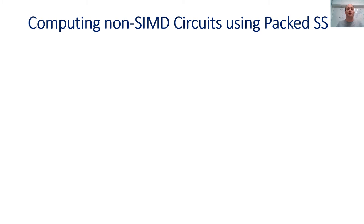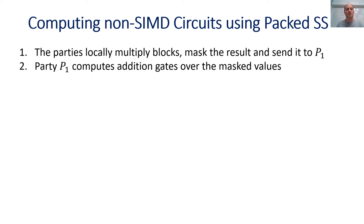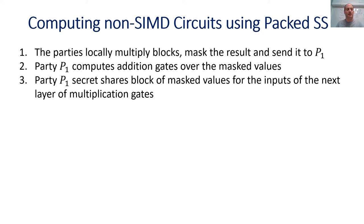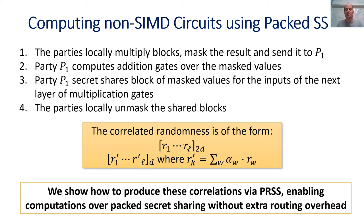Generalizing this example: parties locally multiply blocks of shared values, mask the result, and send to P1, who reconstructs masked outputs and computes addition gates over masked values. When P1 reaches the next multiplication layer, shares blocks of masked inputs which the parties then unmask. What we need to support this process is correlated randomness in the form of shares of random blocks of L secrets using a polynomial of degree 2D, where for each secret the linear constraints induced by the circuit structure are satisfied. We show in the paper that we can produce these correlations using PRSS, enabling computation over packed secret sharing without any extra overhead.